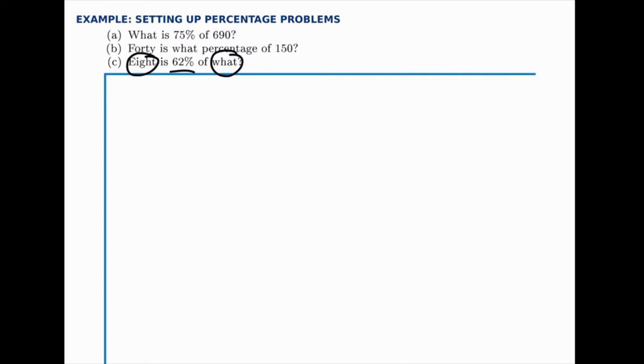So, in each case, we're comparing two numbers with a percentage. There are three parts to every problem, and one of those parts will be unknown every time. By doing these three problems, we'll see all the different possibilities, because in each case, we have the unknown part in a different place.